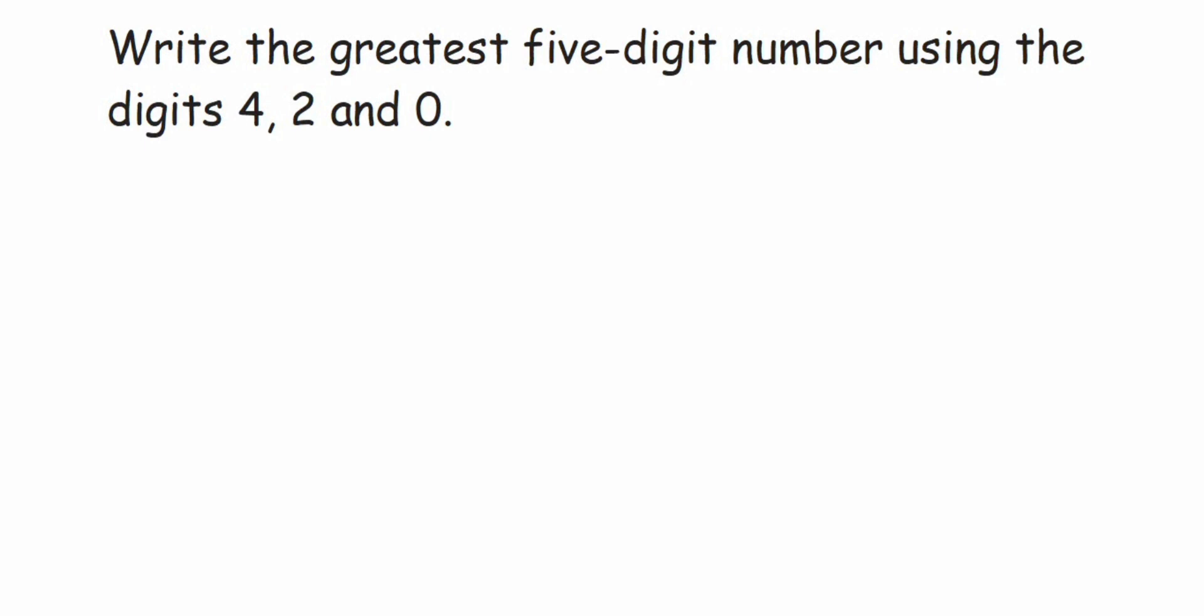Hey everyone, here's a question from the knowing numbers chapter. The question is: write the greatest five-digit number using the digits 4, 2, and 0. So we're asked to create a five-digit number using 4, 2, and 0.